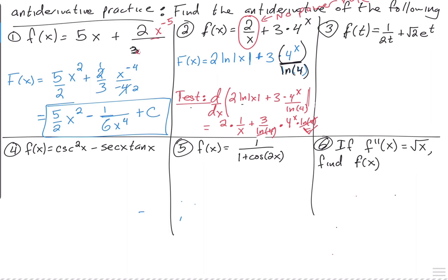So the third one — notice that this 1 over 2t: you might be tempted to say the anti-derivative of this is ln of 2t, but that's not actually quite right. Because if you get the derivative of that, you'd have to use the chain rule, so you'd multiply by the derivative of 2t, which is 2 — and that does not give you 1 over 2t. So that is the incorrect anti-derivative.